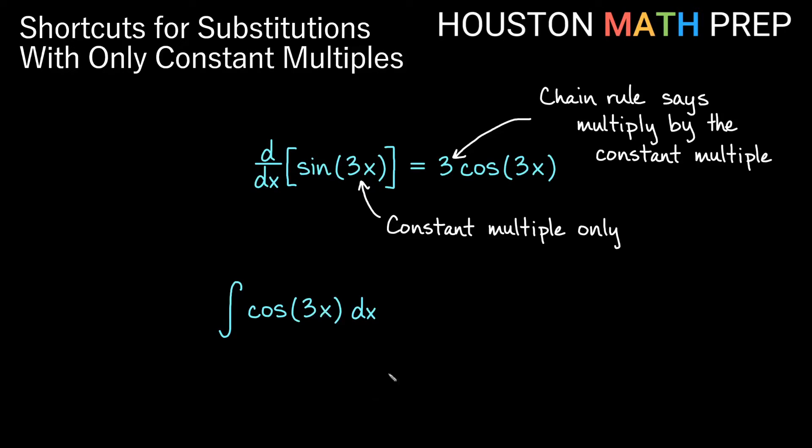But because this is just a constant multiple, what we want to make sure you realize is the opposite thing is going to happen as far as the constant multiple here. With derivatives, if you have only a constant multiple inside you will get multiplied by that constant multiple from the chain rule.